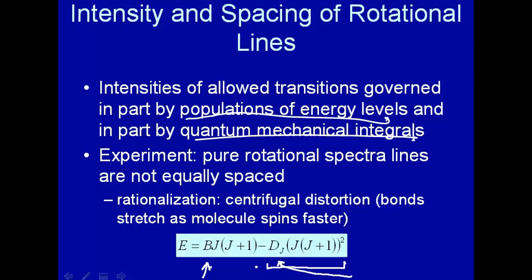And instead of J, J plus 1, we have J, J plus 1 quantity squared. So you're adding a squared term to take into account centrifugal distortion.